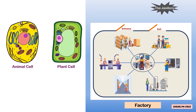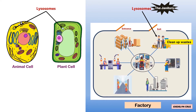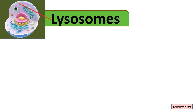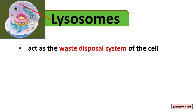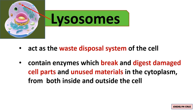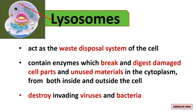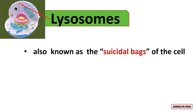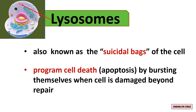In the factory, the janitors represent lysosomes. They clean up and break down waste in and around the factory. Lysosomes act as the waste disposal system of the cell. They contain enzymes which break and digest damaged cell parts and unused materials in the cytoplasm from both inside and outside the cell. They also destroy invading viruses and bacteria. Lysosomes are also known as the suicidal bags of the cell — they program cell death, or apoptosis, by bursting themselves when cells are damaged beyond repair.